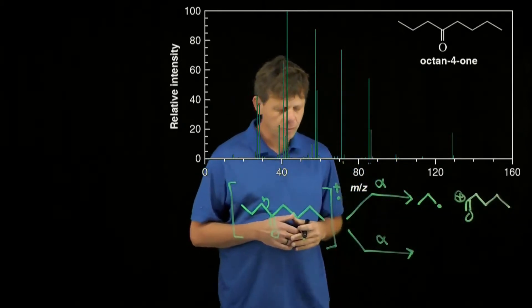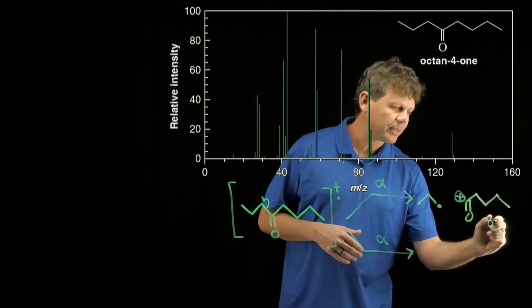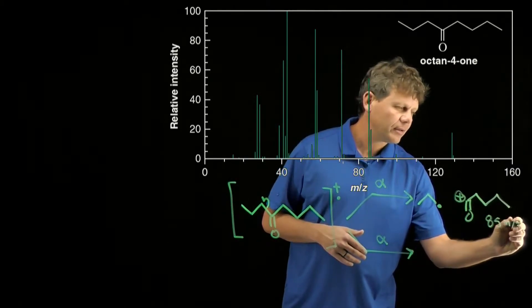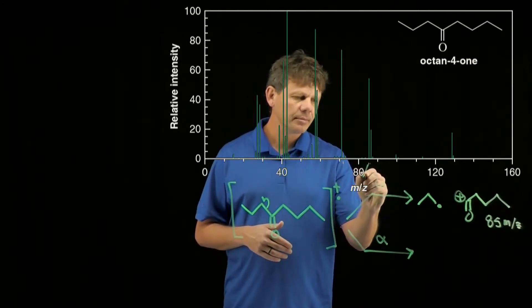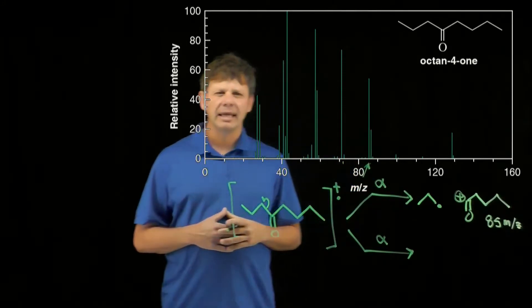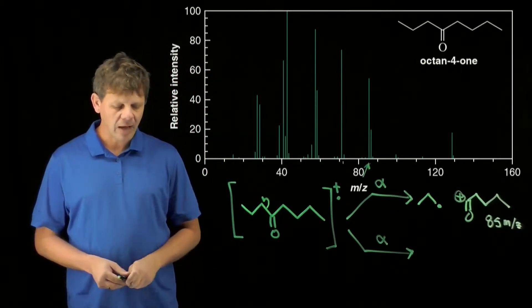The mass to charge ratio, or the mass of this fragment, we would expect to see something at 85 mass to charge ratio. And if we look at our spectrum, you can see that we do see something at 85. We see a peak at 85 that corresponds to that alpha cleavage.